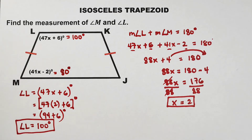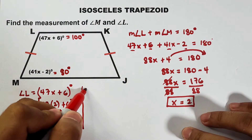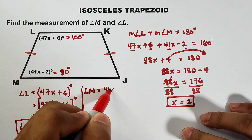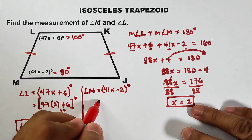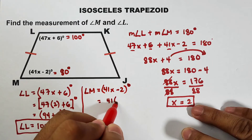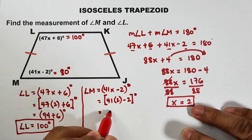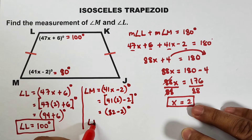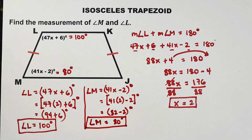Because they are leg angles of an isosceles trapezoid. If you want, here is the full solution: angle M equals 41x minus 2 degrees. With x equal to 2, this is 41 times 2 minus 2 degrees, which equals 82 minus 2 degrees. So your angle M is equal to 80 degrees. And that's it for this kind of problem. Now let's continue.